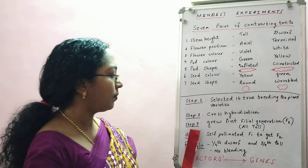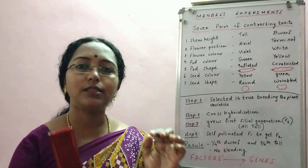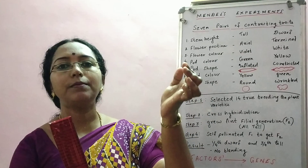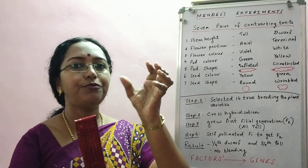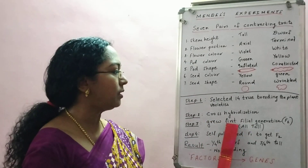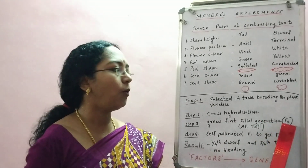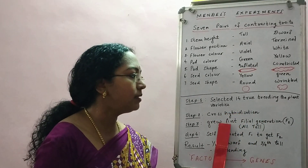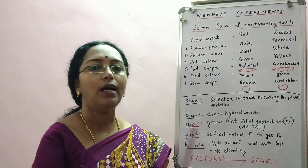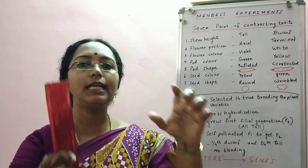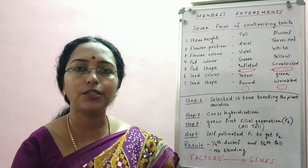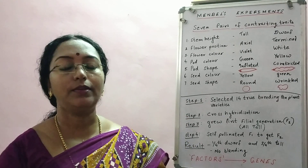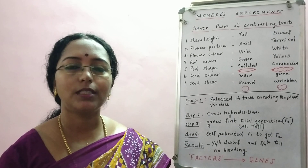Step three: after cross pollination, he waited for seeds to form, sowed those seeds, and a new plant came out. That new plant is called the first filial generation, or F1 generation. After cross hybridization of two true breeding plants, the generation you get is the F1 generation. He then waited patiently to see whether the F1 plants would be tall or dwarf.